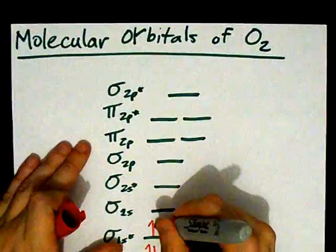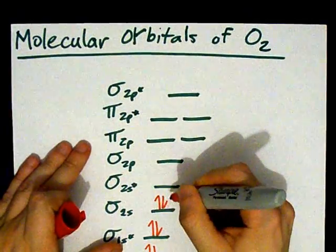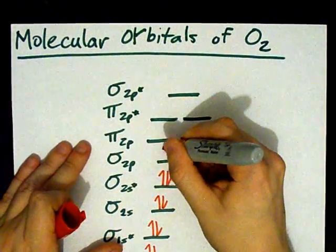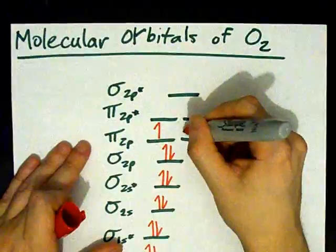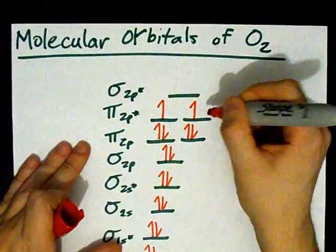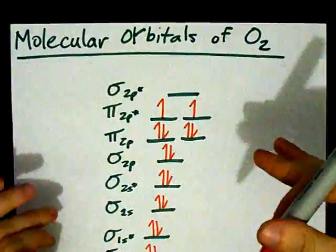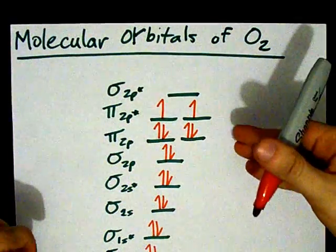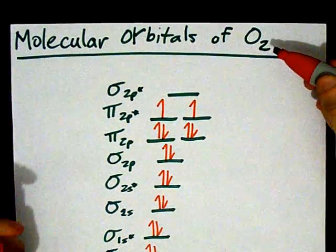1, 2, 3, 4, 5, 6, 7, 8, 9, 10, 11, 12, 13, 14, 15, 16. Done! This is the molecular orbital diagram for O2.